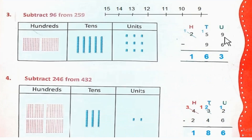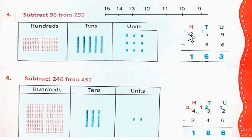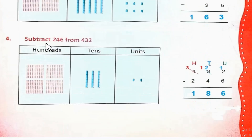259 से 96 को minus करें। 9 minus 6 = 3। अब 5 से 9 को नहीं निकाला जा सकता, तो हम borrow करेंगे। 100 से borrow करेंगे तो यह 2 से 1 रह जाएगा, और यह 15 हो जाएगा। 15 minus 9 = 6। 1 minus nothing = 1. So the answer is 163.